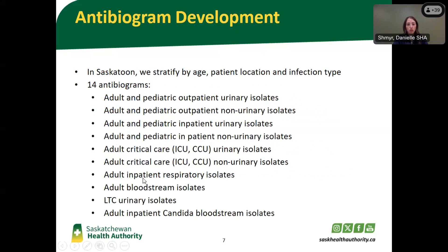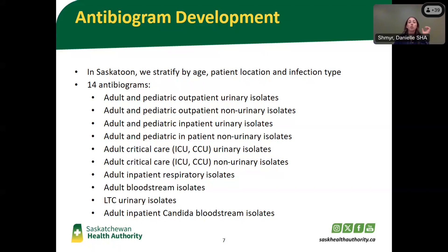In Saskatoon, we're very fortunate — we have the support to stratify our data from the lab by age, by patient location, and by infection type or sample type. This actually results in Saskatoon having 14 antibiograms. We stratify by age first — we have adult and pediatric antibiograms — and then we stratify further by outpatient and inpatient, so community-acquired versus hospital-acquired infections. Then we look at both urinary isolates — if you're treating a UTI, you'd look at that antibiogram — versus a non-urinary isolate antibiogram that includes bloodstream, respiratory, tissue samples, and abscess aspirates.